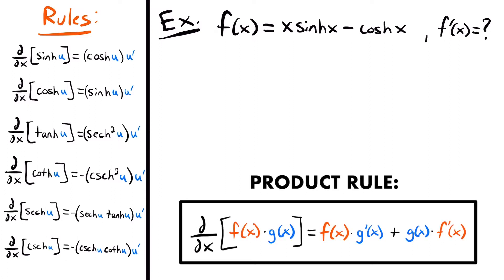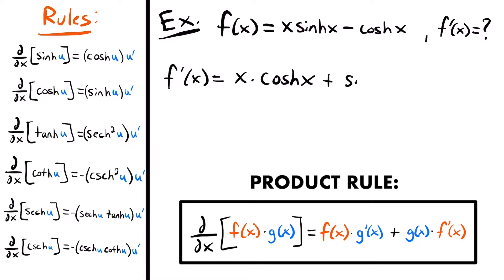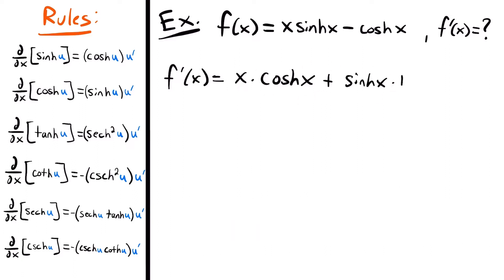Using the product rule, f prime of x equals the first function x times the derivative of the second function, hyperbolic sine of x. The derivative of hyperbolic sine of x is hyperbolic cosine of x, times the derivative of x, which is just 1. So the derivative here is hyperbolic cosine of x. Then we add the second function, hyperbolic sine of x, times the derivative of the first function x, which is 1.